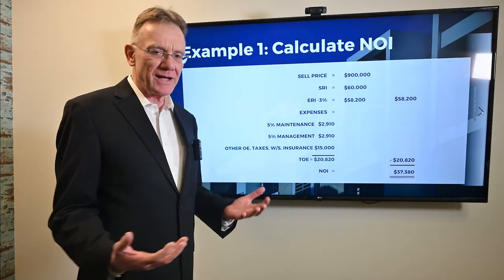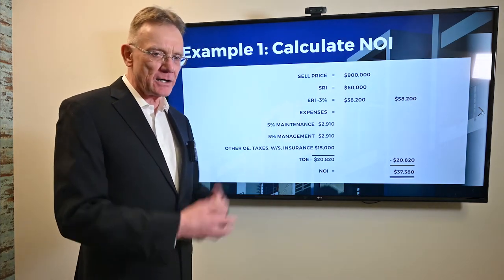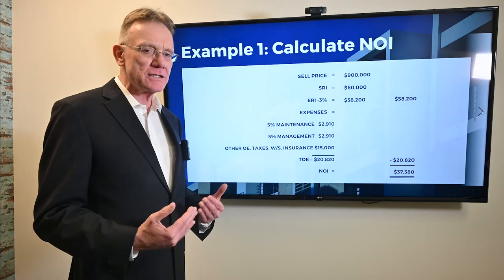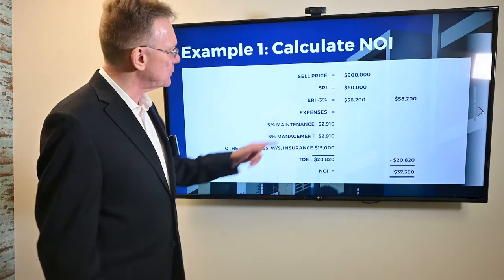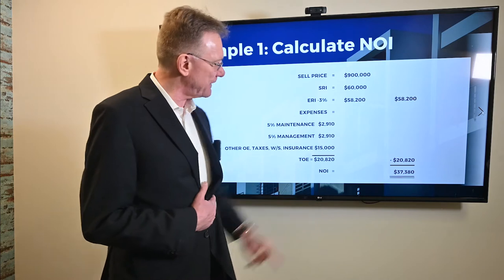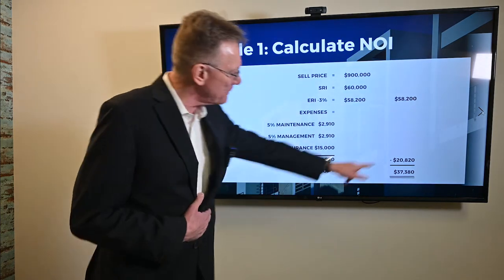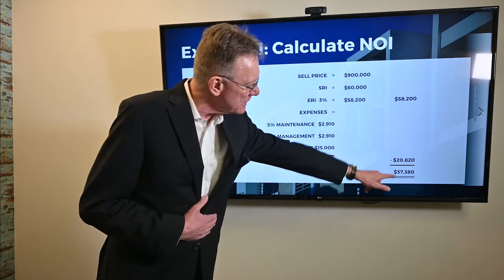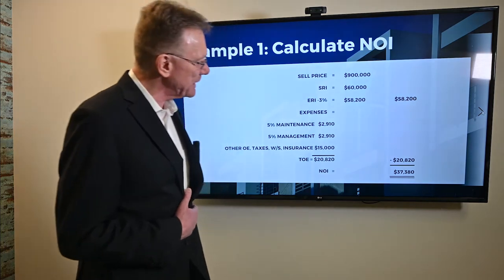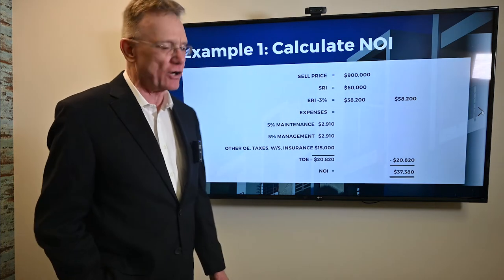Now we've got the numbers to calculate our NOI — our net operating income. We know our revenue, the effective rental income, and we know our total operating expenses. When you do the math, we have a net operating income of $37,380.